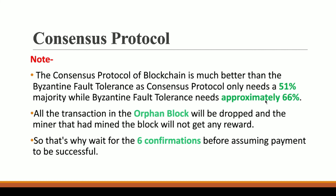All transactions in the orphan block will be dropped and go back to the mempool so that miners can solve for them again. Also, the miner who mined the orphan block — like C who created the purple block — will not receive any reward because that block got discarded from the blockchain network by the consensus protocol.